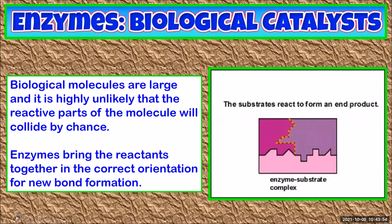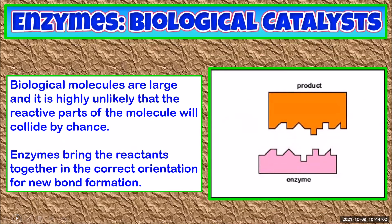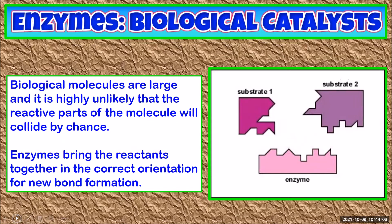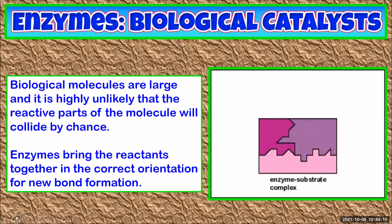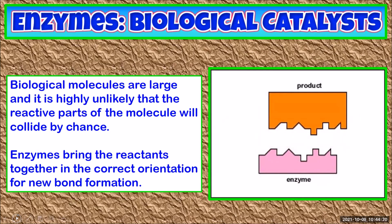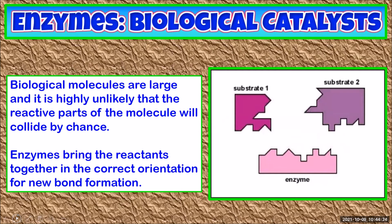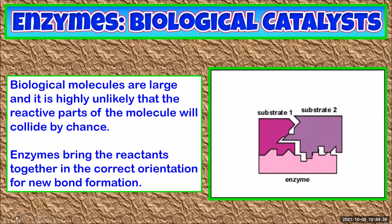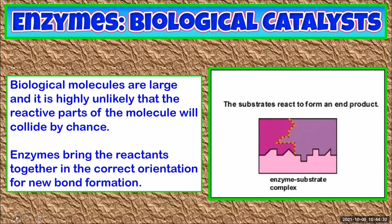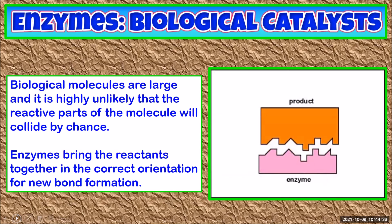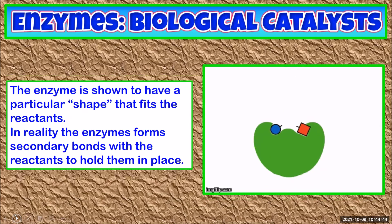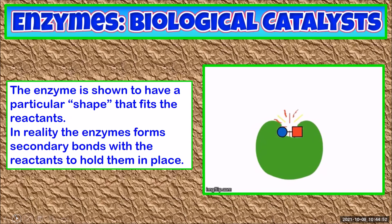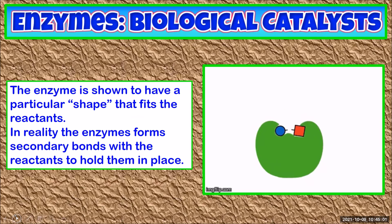Enzymes are catalysts for biological reactions — they speed up reactions. In some cases, enzymes can make a chemical reaction millions of times faster than it could occur on its own. Biological molecules are very large and it's highly unlikely that reactive parts of the molecule will collide just by chance. Enzymes are made of proteins folded into complicated shapes. The enzyme holds the molecules in the correct orientation for new bonds to form, shown as a shaped hole that the reactant molecule fits into, representing secondary bonds that bind the reactant to the enzyme. Once new bonds have formed, the product is released and the enzyme can take in more reactant molecules.